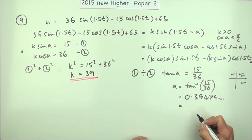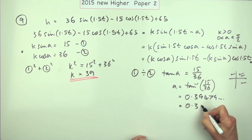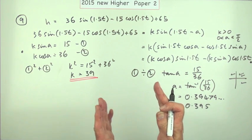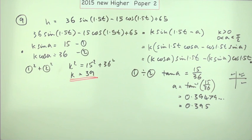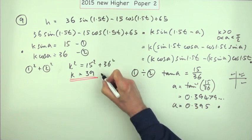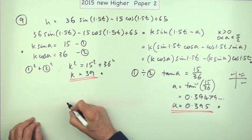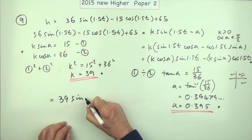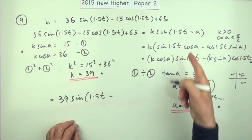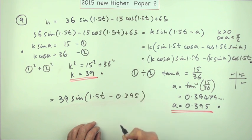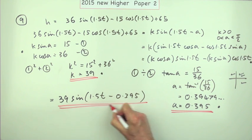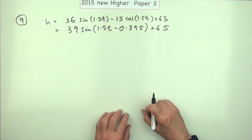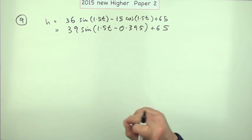So A = 0.395, and that's a mark. I can now write the expression as 39 sin(1.5t − 0.395) for the first part. Or you could put it back into the expression for H with the 65 added at the end. That would do. Now what's the second part?